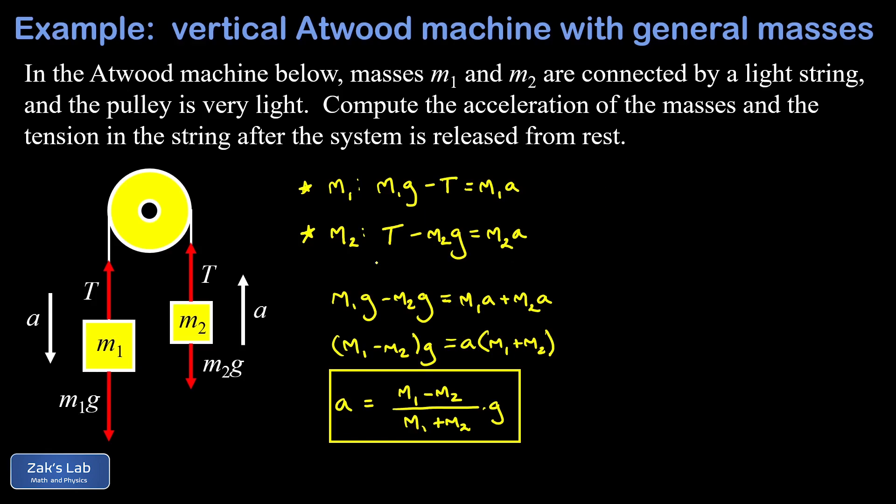I'm going to solve that for T real quick and write T is m2g plus m2a. It's probably a good idea to go ahead and factor this so I'm going to write it as m2 times g plus a. Now we just have to plug in the acceleration that we already found.